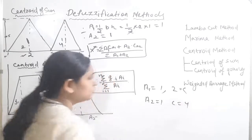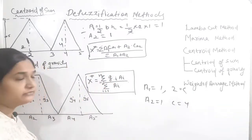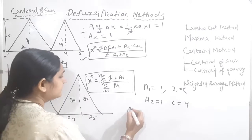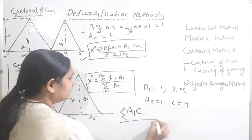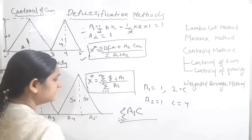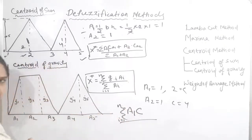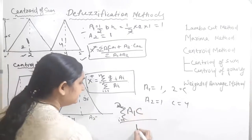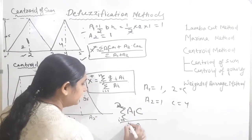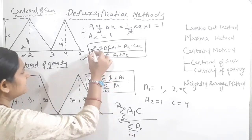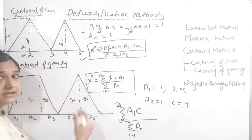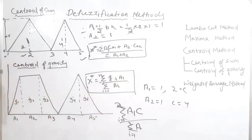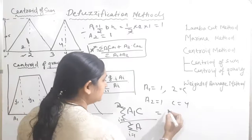So we have A1 equals 1 and A2 equals 1. The centroid for the first figure is 2 and for the second it is 4. The formula to calculate x star — the crisp value — is the summation of area into its centroid, for i equals 1 to n, divided by the summation of all the areas.